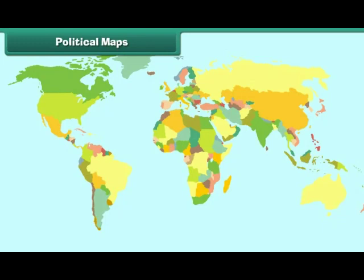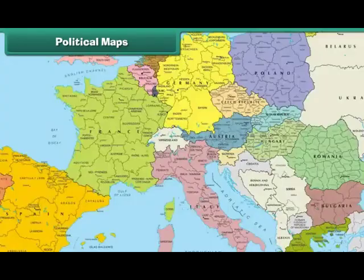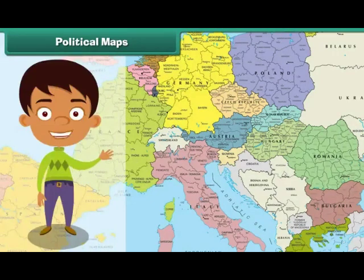A political map is a map that shows lines defining countries, states and territories. Its purpose is to show the political borders. For example, the world political map shows all the countries of the world with their capitals. Similarly, the political map depicts all the political boundaries and also the names and capitals of all the countries in Europe. Thus, political maps help us in understanding the world better.